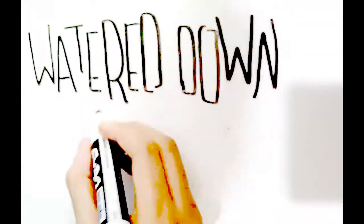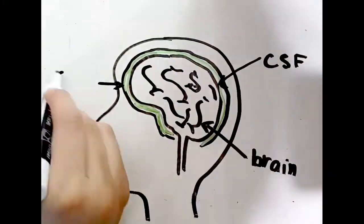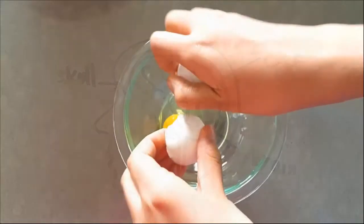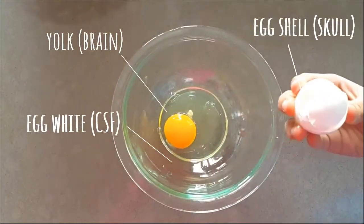But what really is the fluid that our brains are floating in? We are talking about cerebrospinal fluid, or CSF for short, a thick fluid that lies between our brain and skull. It's kind of like an egg. The yolk is like the brain, the white is the CSF, and the shell is the skull.